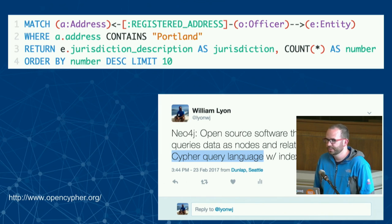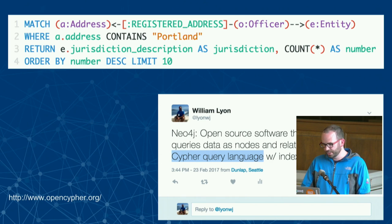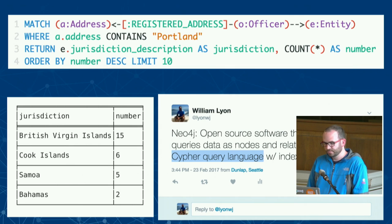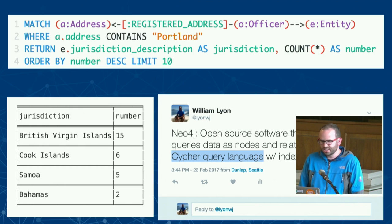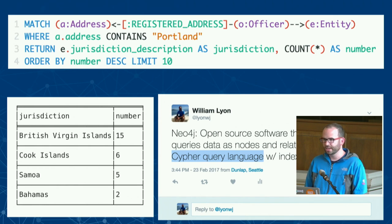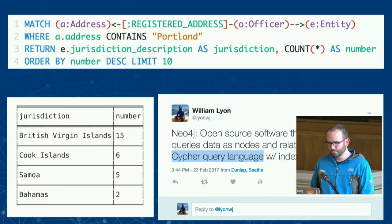Those first two lines say: find paths in the graph where we have officers with an address in Portland, and find the legal entities they're connected to. In the return clause, we're doing a group-by and aggregation to count the number of paths. The answer to the question — for everyone with an address in Portland, what are the jurisdictions of the offshore entities they're connected to? — is that the British Virgin Islands is the most common, followed by the Cook Islands. Most people caught up in this dataset were in Europe due to offshore laws.